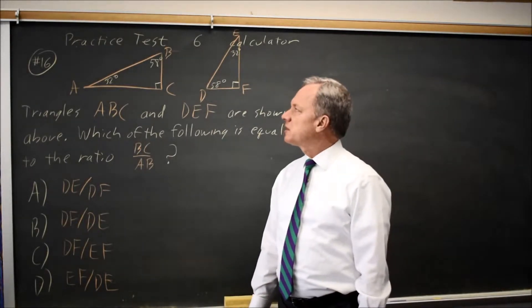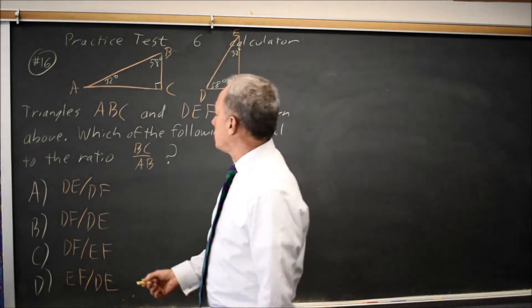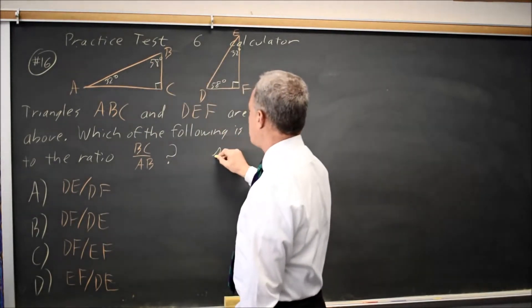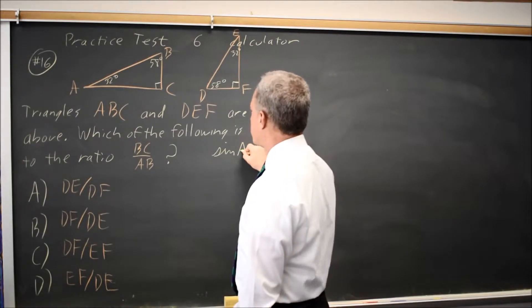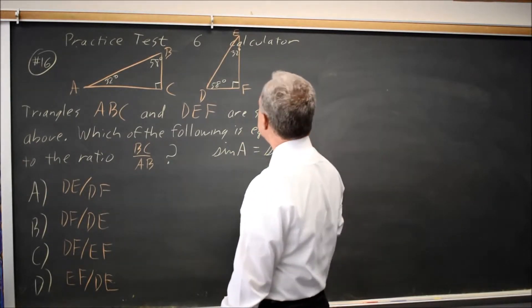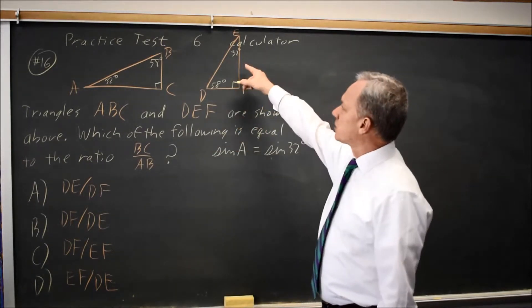You can look at this as a trig question where they're asking BC over AB. That is the sine of angle A, which is the sine of 32 degrees. And in our second triangle, the sine of angle E would be equal because that is also sine of 32.